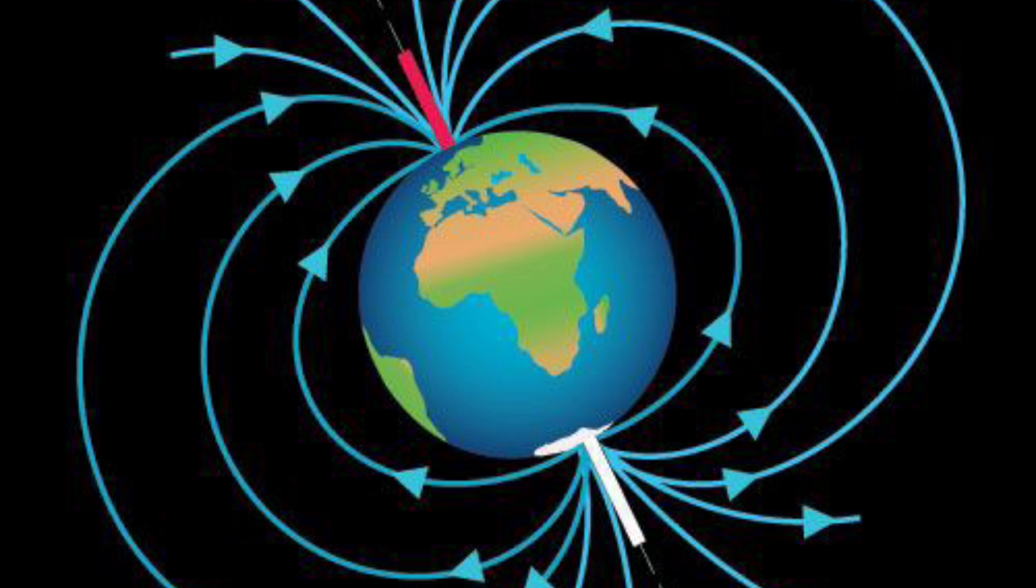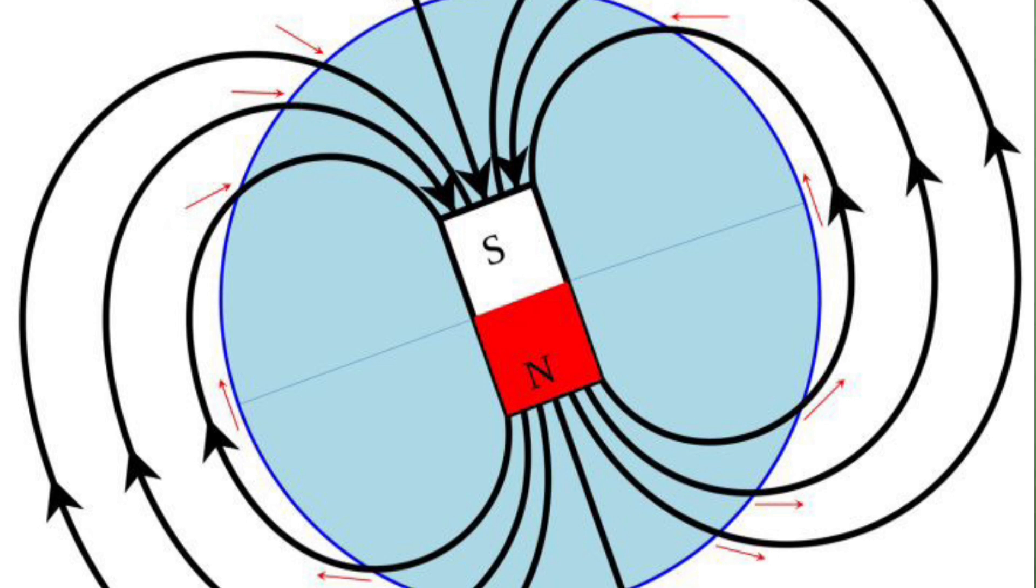The path along which unit north pole moves in a magnetic field is called magnetic lines of force or magnetic field line. Next we move to some properties of magnetic lines of force.